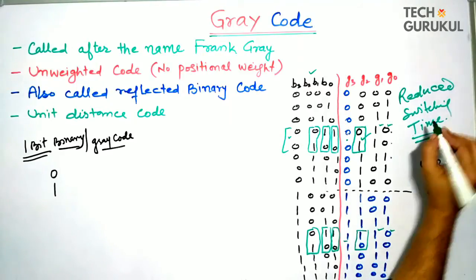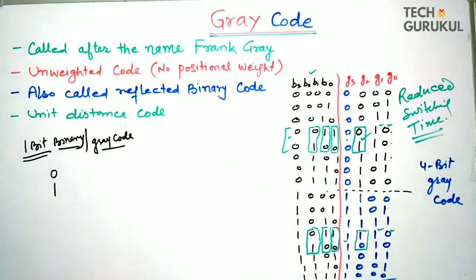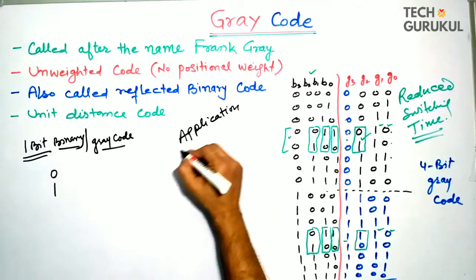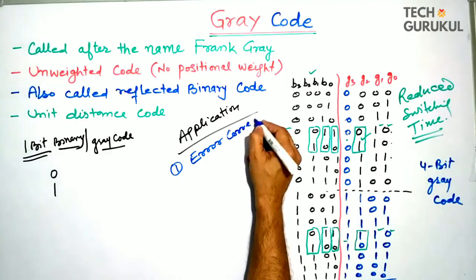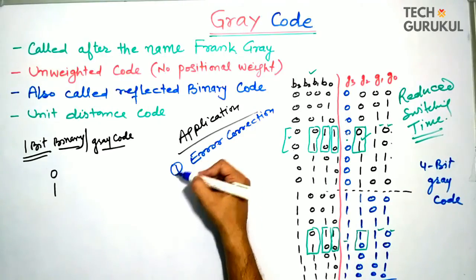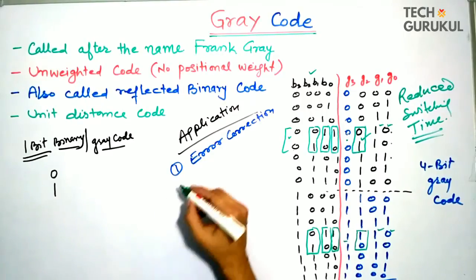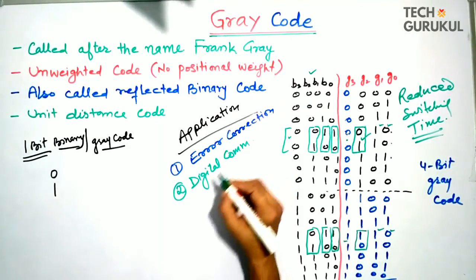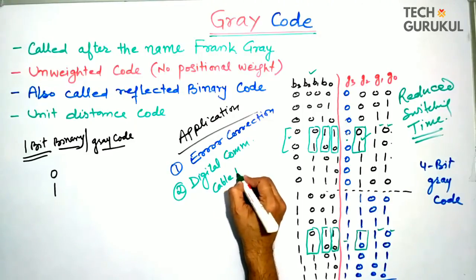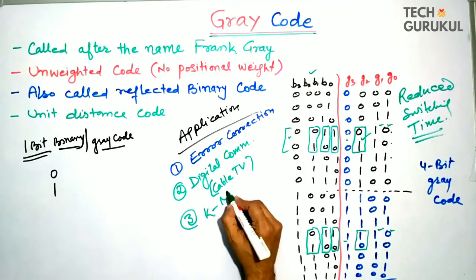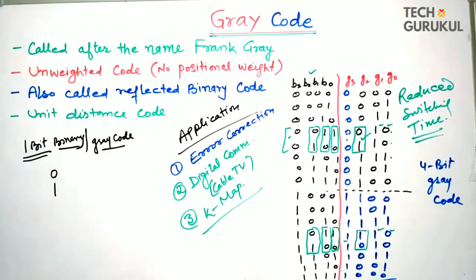Switching time is reduced in Gray code as compared to binary code. Applications of Gray code include: first, error correction; second, digital communication such as cable TV systems; and third, Karnaugh map (K-map) predictions. That is all for this presentation — if you have any doubts, write in the comment box.